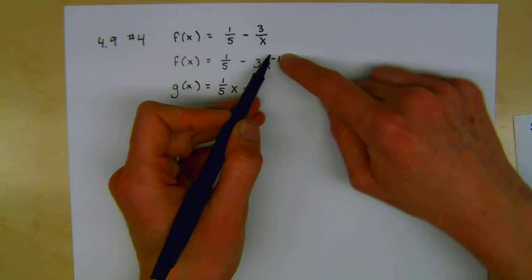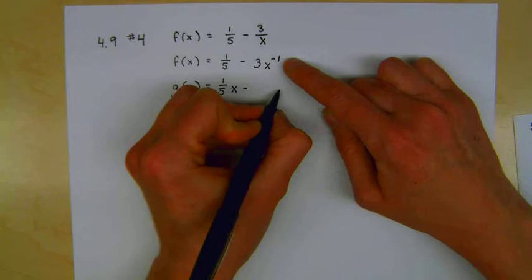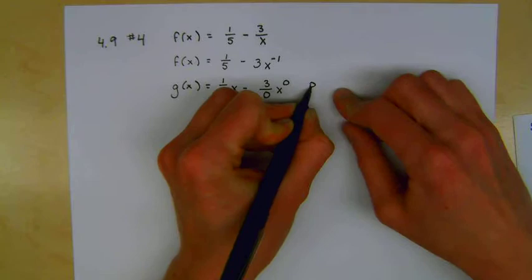And then thinking about power rule, what do we typically do? We would add 1 to the exponent and then divide by that. And in this case, that would be adding 1 to get 0. We would get x to the 0, 3 divided by 0, which is bad.